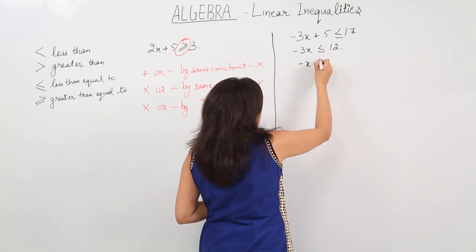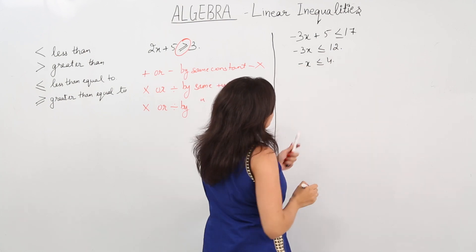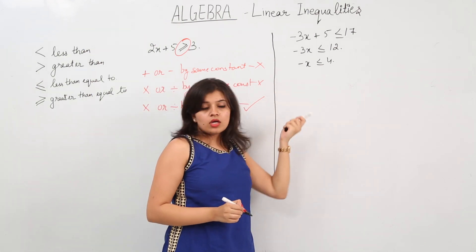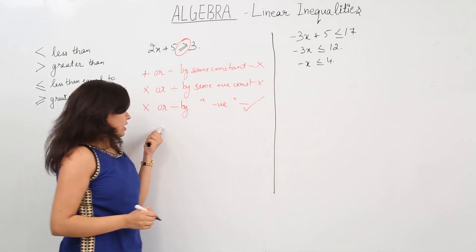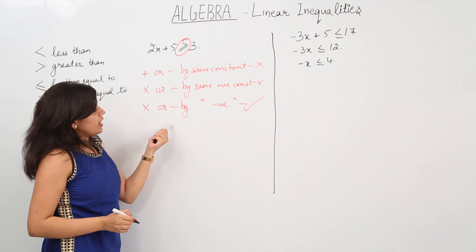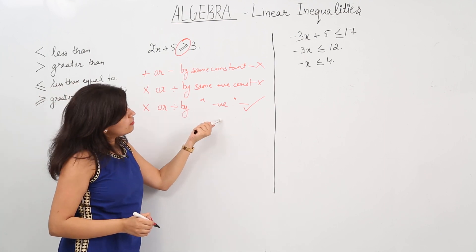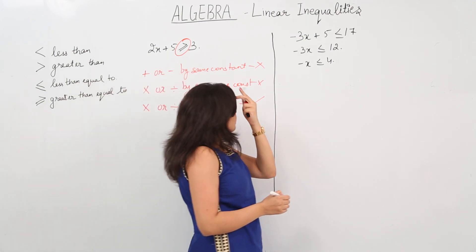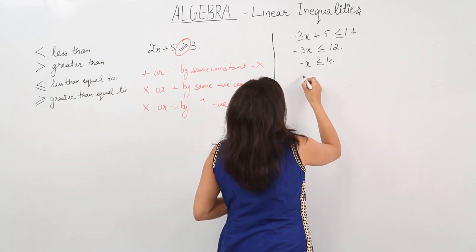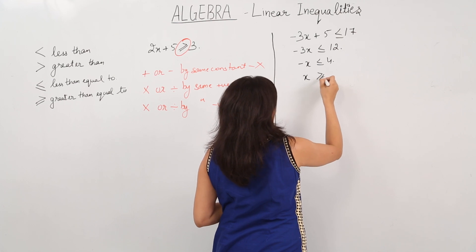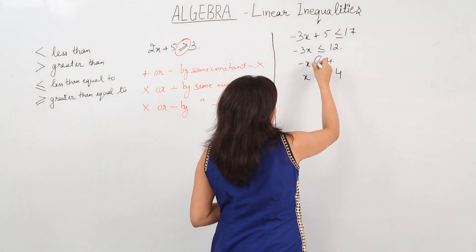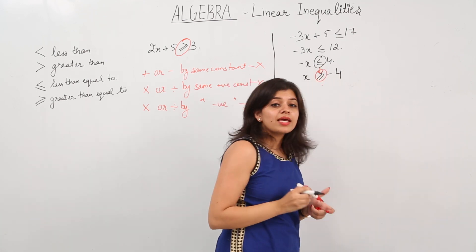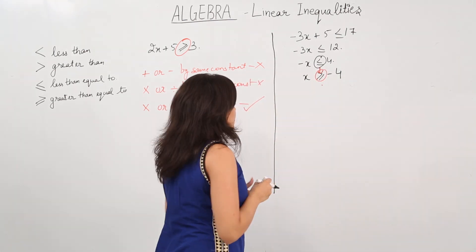We get minus x is less than or equal to 4. Now to find the value of x, we multiply both sides by minus 1. Since we are multiplying by a negative constant, the sign of the inequality is reversed. So we get x is greater than or equal to minus 4.